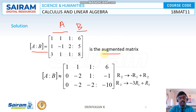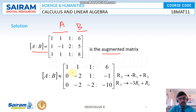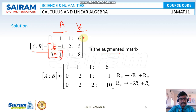We follow the same procedure used to find the rank of a matrix — converting to upper triangular form. The main goal is to create zeros in the lower positions. First, we make the entry below a11 zero by computing R2 minus R1.